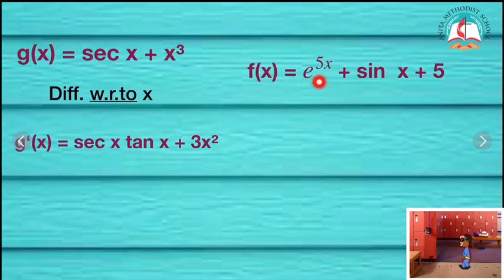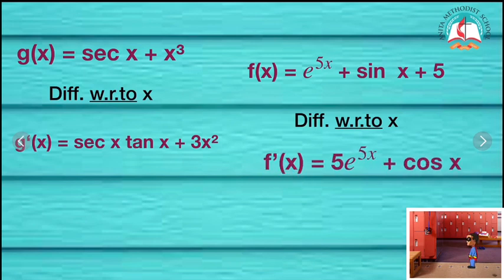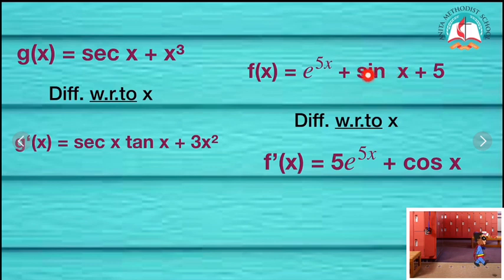f of x is equal to e to the power 5x plus sin x plus 5. If I am differentiating with respect to x, then f dash of x is equal to 5 into e power 5x — because 5 is a coefficient I should write it down. So 5e power 5x, plus sin x differentiation is cos x, and the constant 5's differentiation is 0.